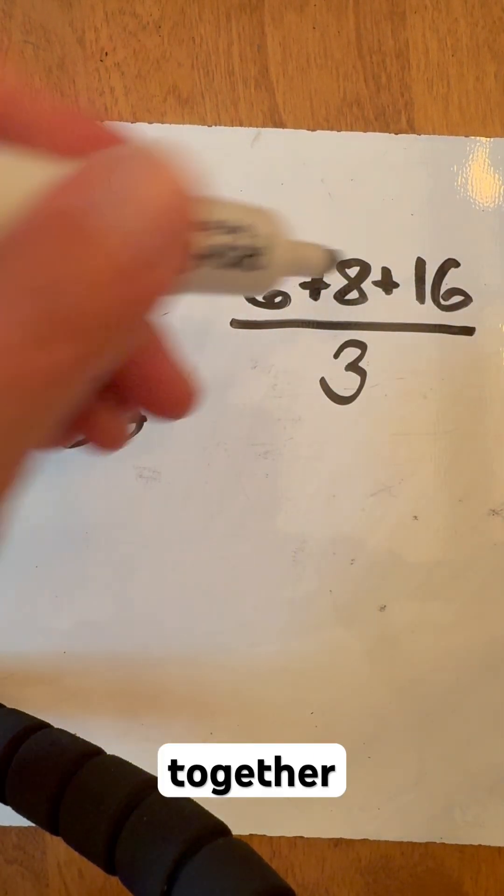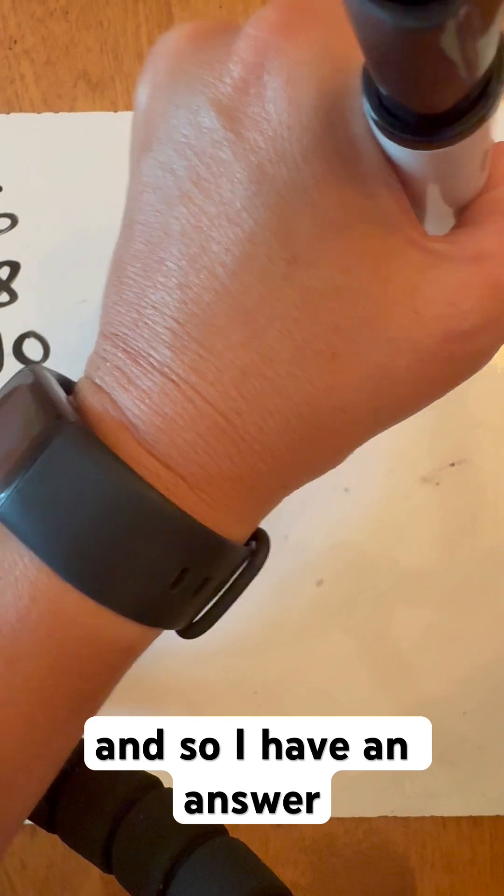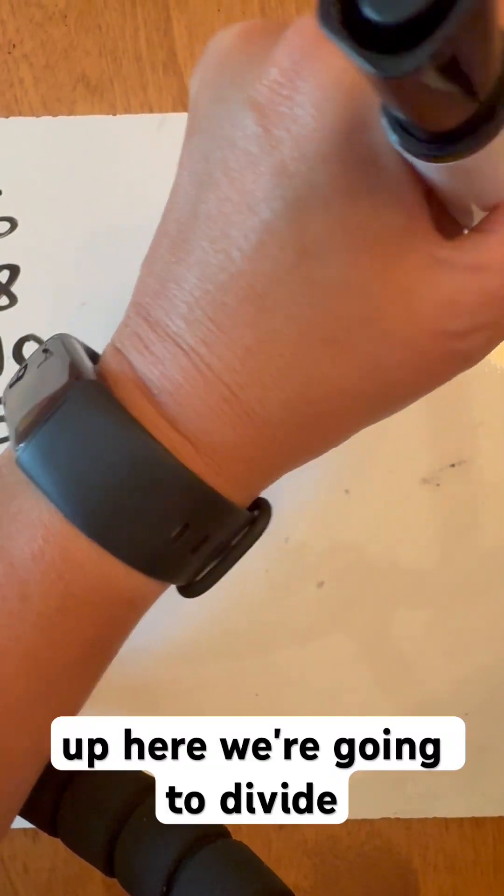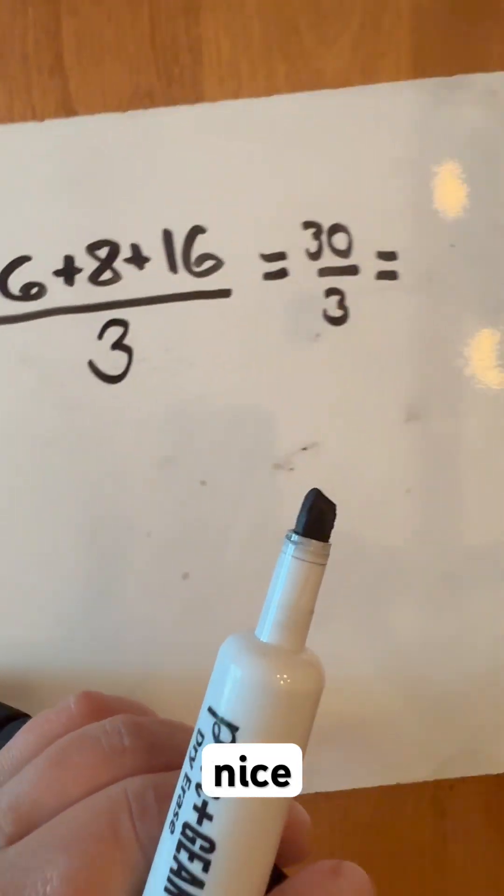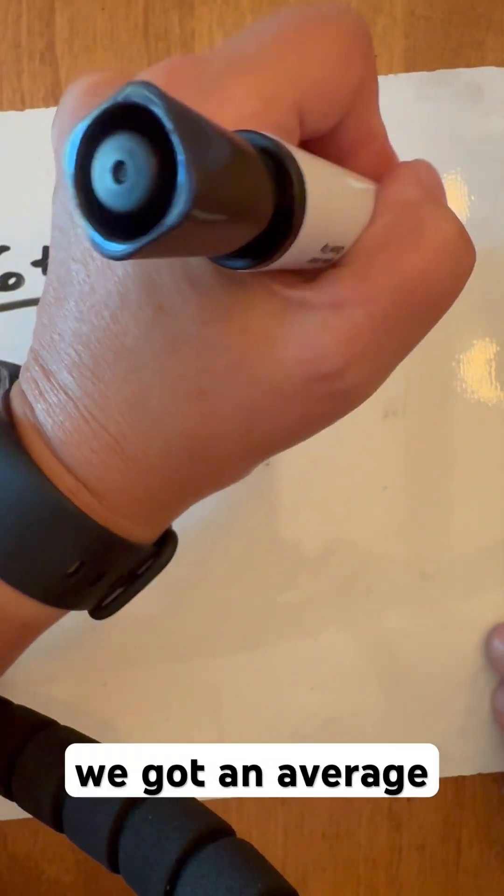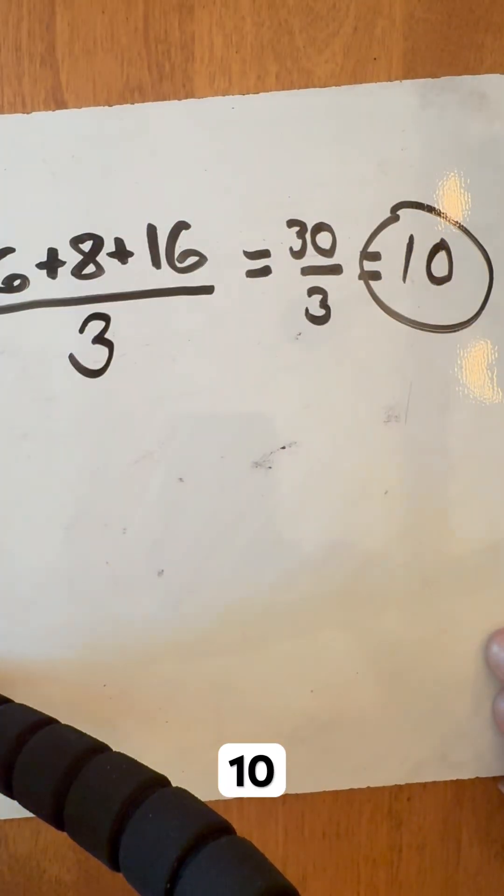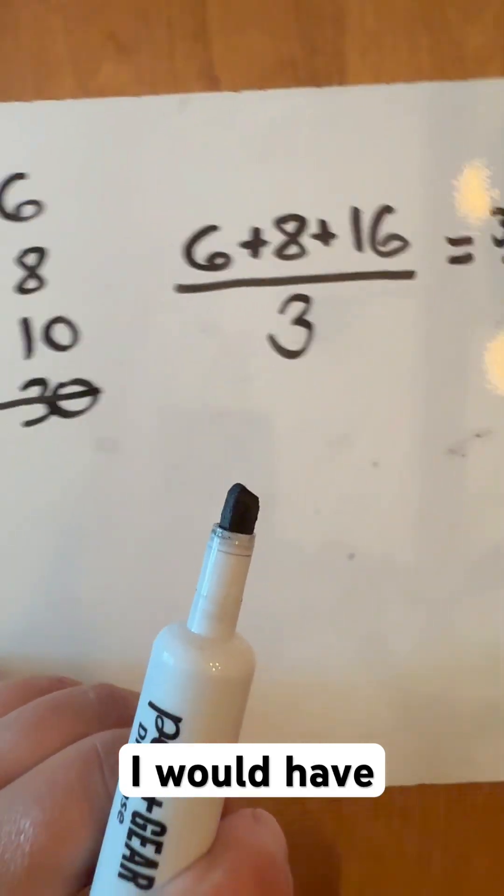When I add all three together, I get 30. So we have 30 up here, and we're going to divide that by 3. 30 divided by 3 - nice easy work - gives us an average of 10.